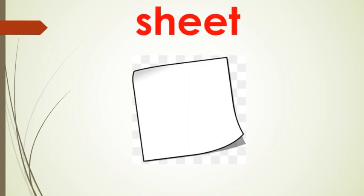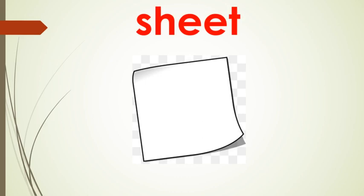What do you see on the screen? A piece of paper, which we can also call a sheet. It begins with the 'Sh' sound. The word is Sheet. You can see the word written here in red. Please repeat after me — Sheet.